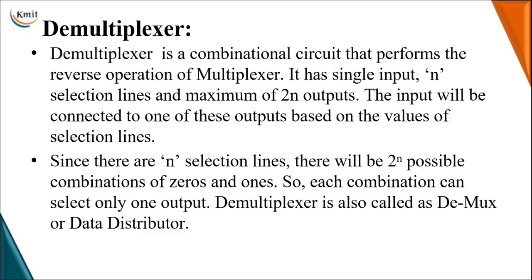This demultiplexer is also one example of a combinational circuit used in data transmission. It performs the reverse operation of a multiplexer — it has only one single input and distributes that single input through multiple outputs.